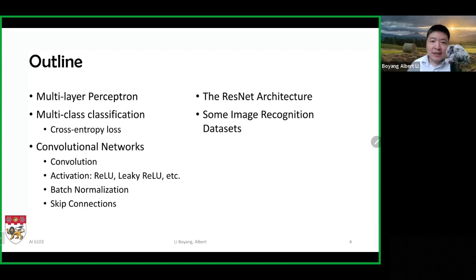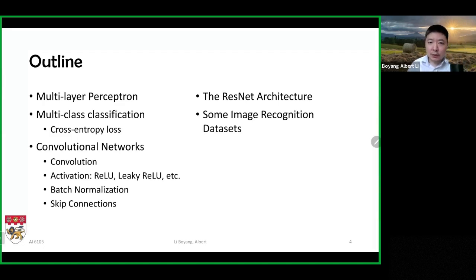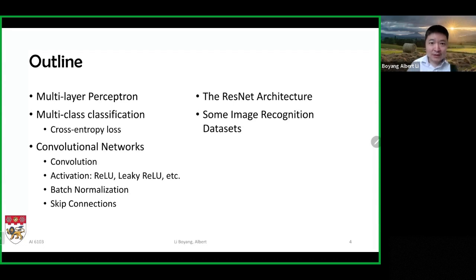We will see how to extend the cross entropy loss to this multi-class scenario. In addition, we will see an extension on the multi-layer perceptron class of models known as convolutional neural networks. We will dissect convolutional neural networks into its components, including the convolution operation, activation functions such as ReLU, batch normalization, skip connections, and so on. Putting them together, we will have the residual network architecture, often referred to as ResNet, and apply it to image recognition datasets.